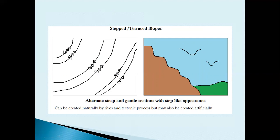Looking at the cross-section view, we get a better idea of what this type of slope looks like in reality — it looks like a series of steps, which is why it is called a stepped slope or terraced slope. Terraced slopes and terracing can occur naturally, but they can also be created by people.